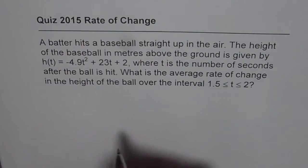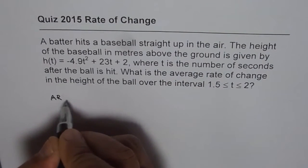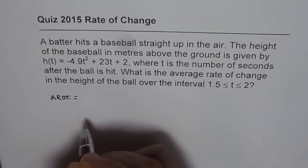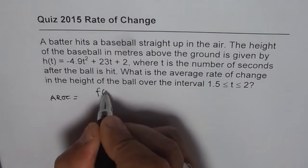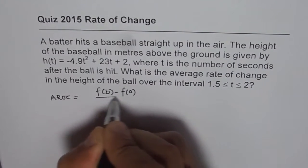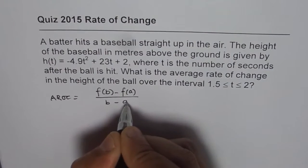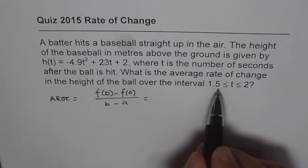You can apply the formula for average rate of change, which is: average rate of change equals f(b) - f(a) divided by b - a. In this case, b is 2 and a is 1.5.